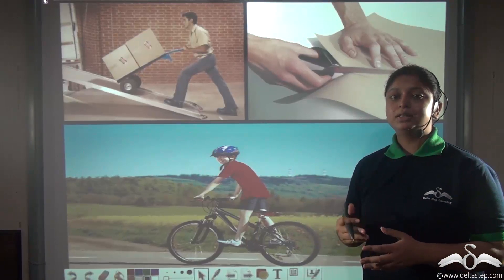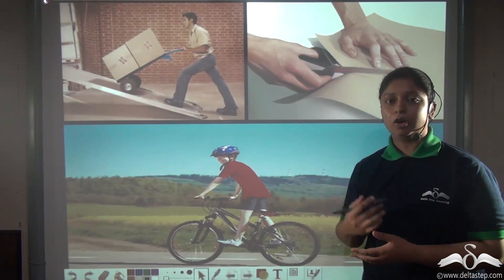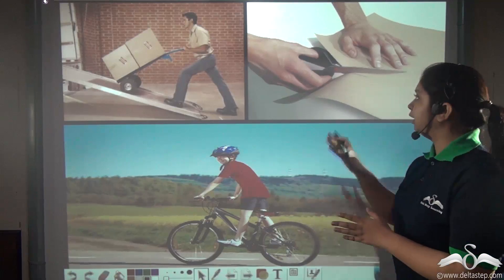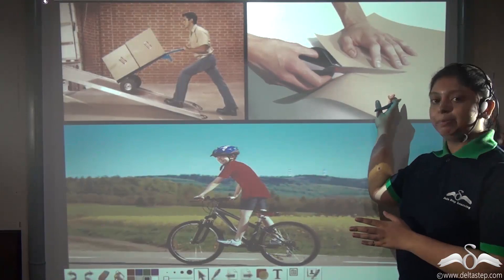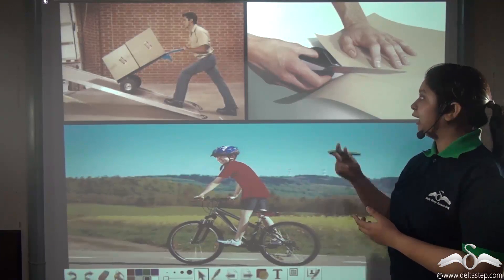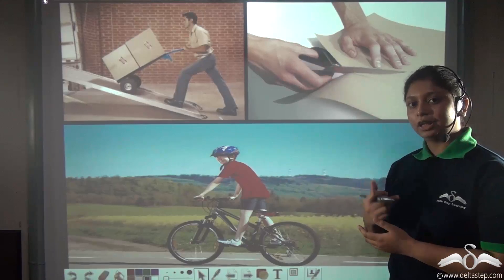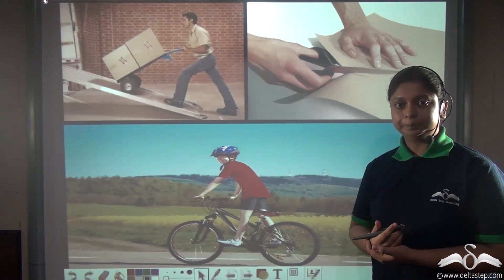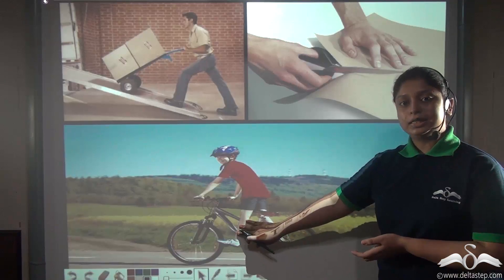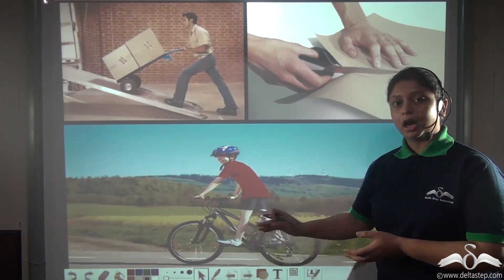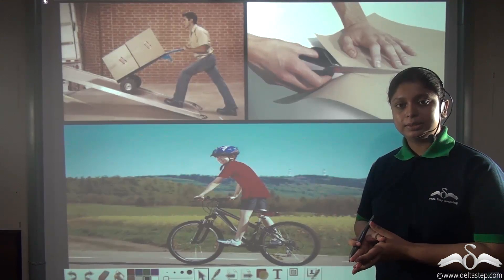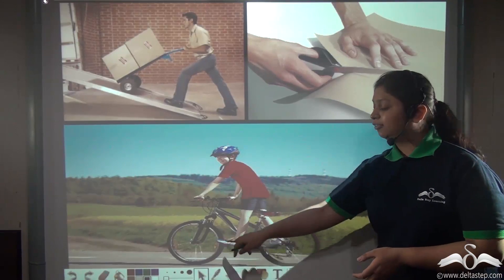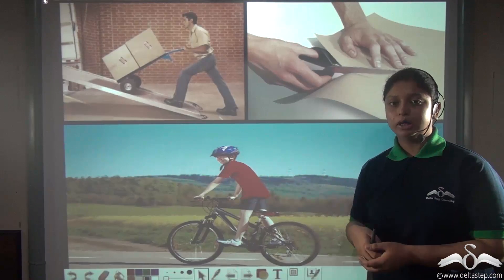Machines also help us in moving a long distance by applying a smaller effort. For example, scissors cut paper or cloth by applying a small effort on the handles while the blades move much longer. Also while cycling, the pedals are moved for a shorter distance and correspondingly the wheels of the bicycle move a longer distance.